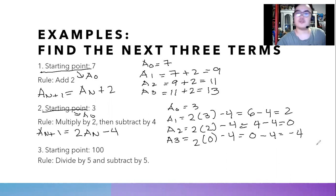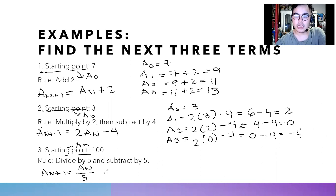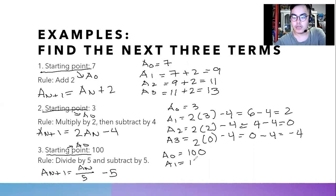So here are the next three terms for the second example. For the third example, the starting point is 100. We state the formula: divide a sub n by five, then subtract five. So we mention the starting point, and to find a sub one, we divide 100 — the current term — by five, then subtract five.